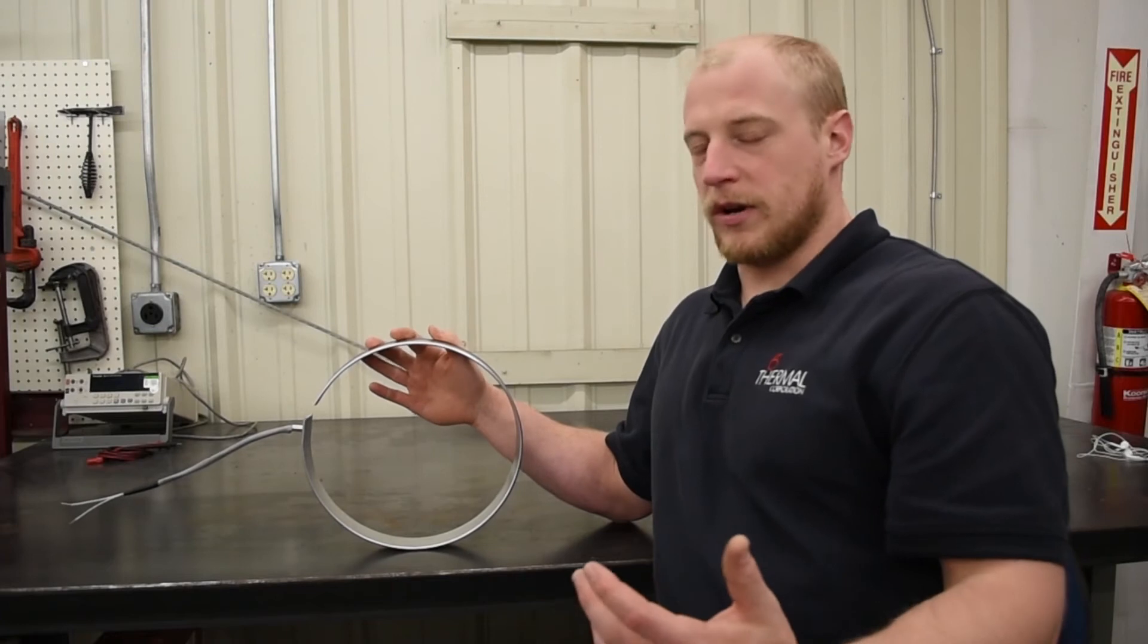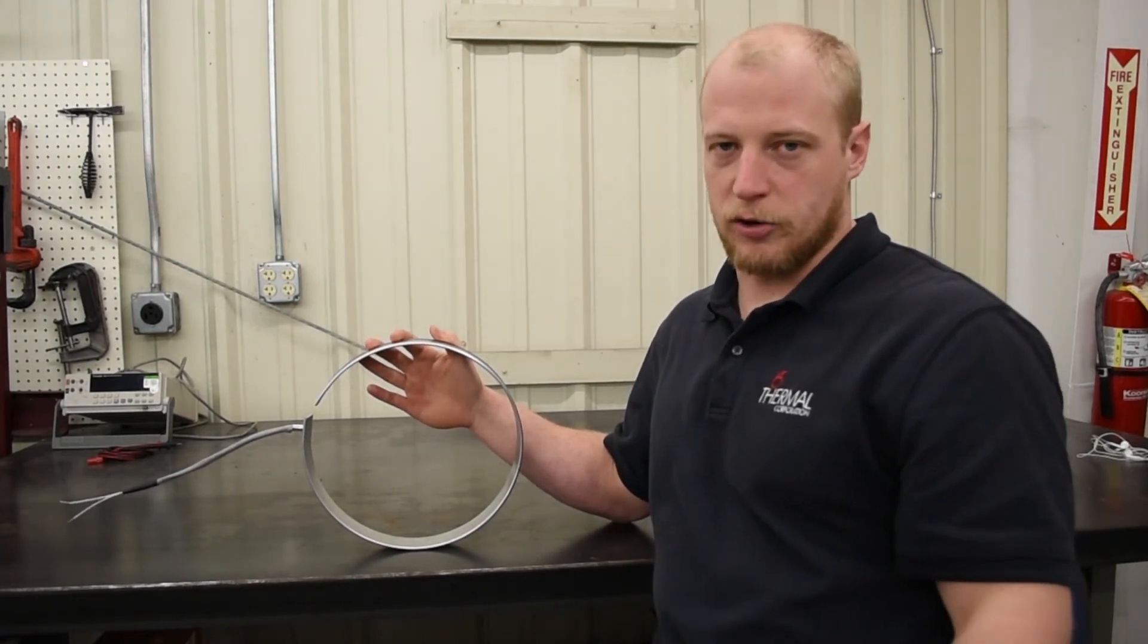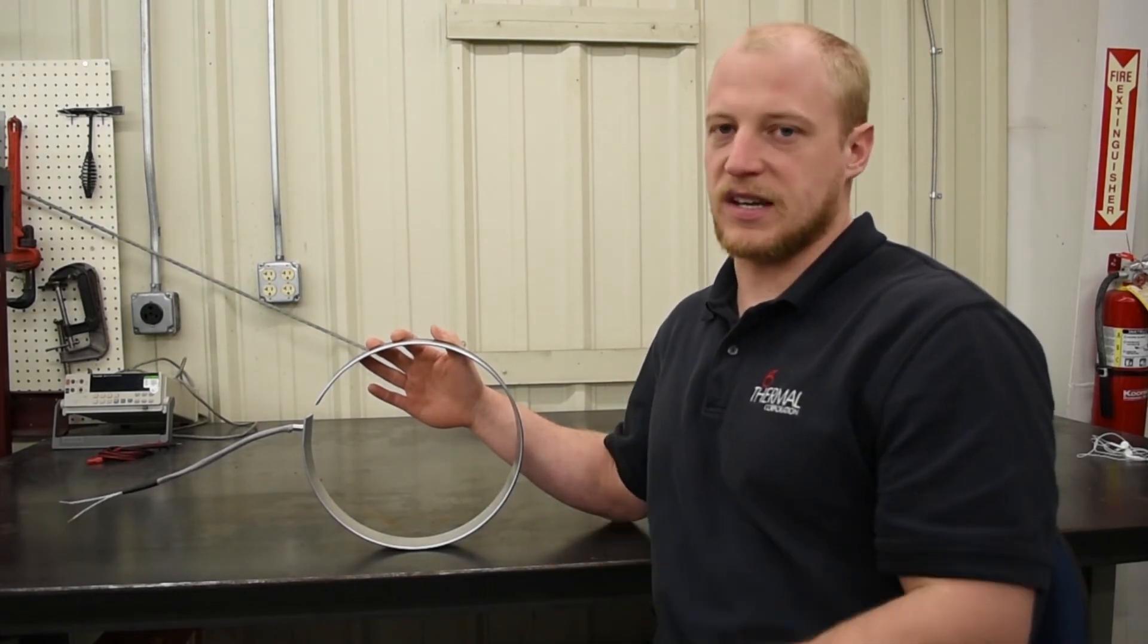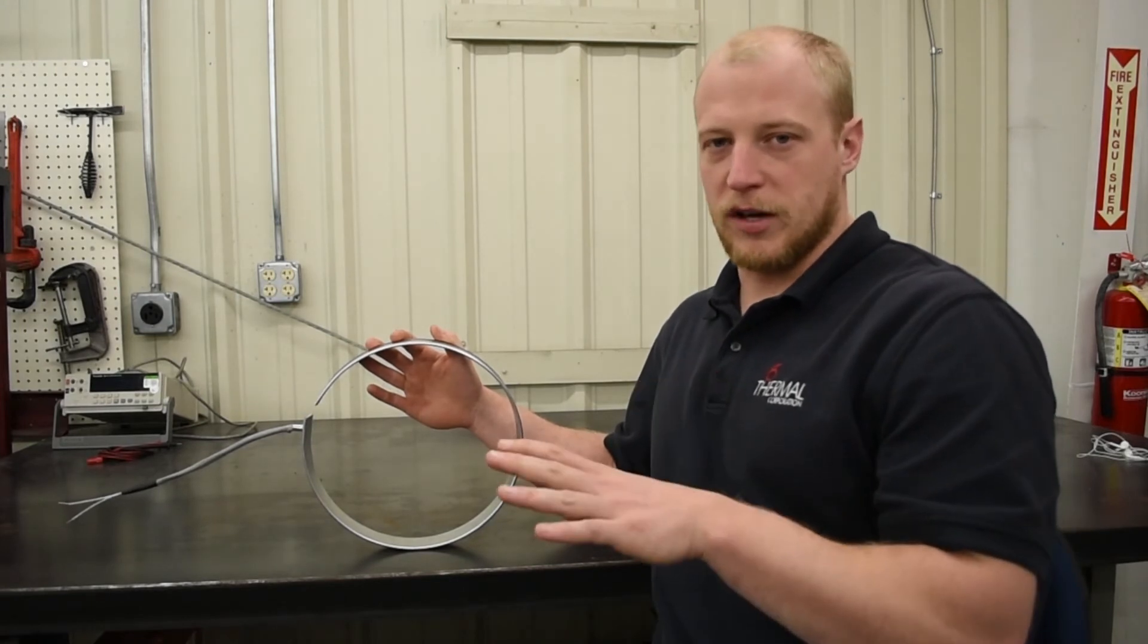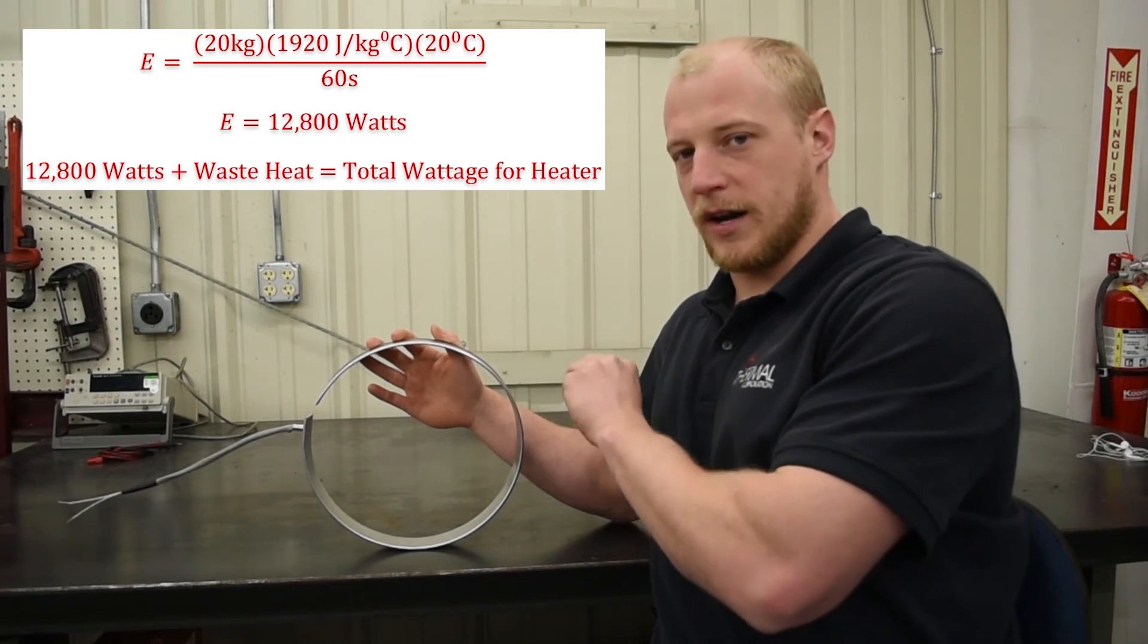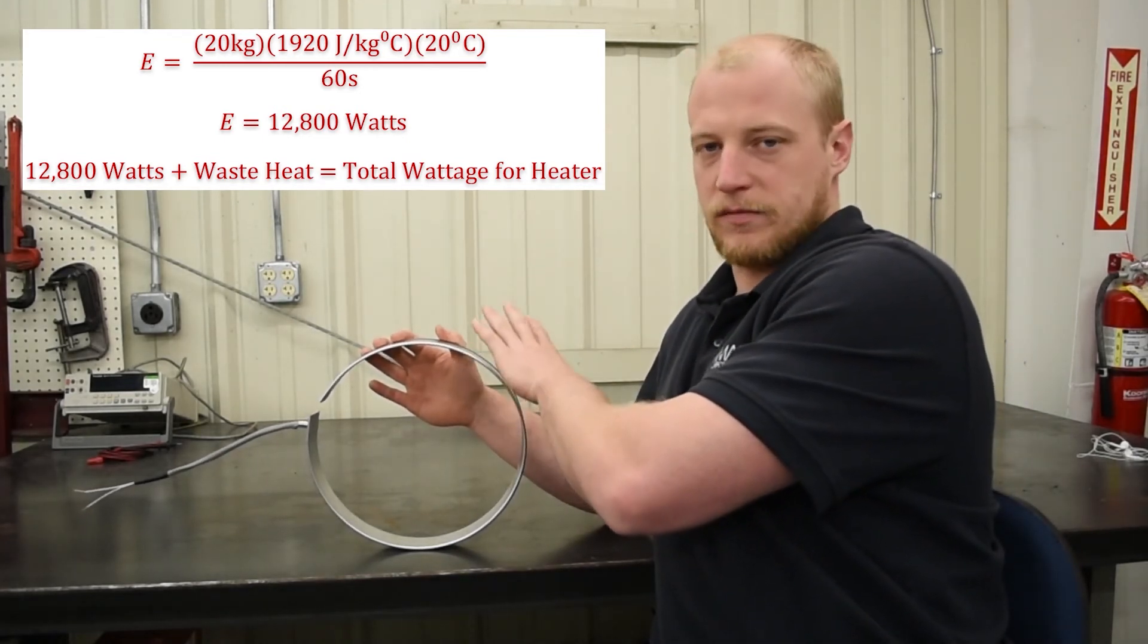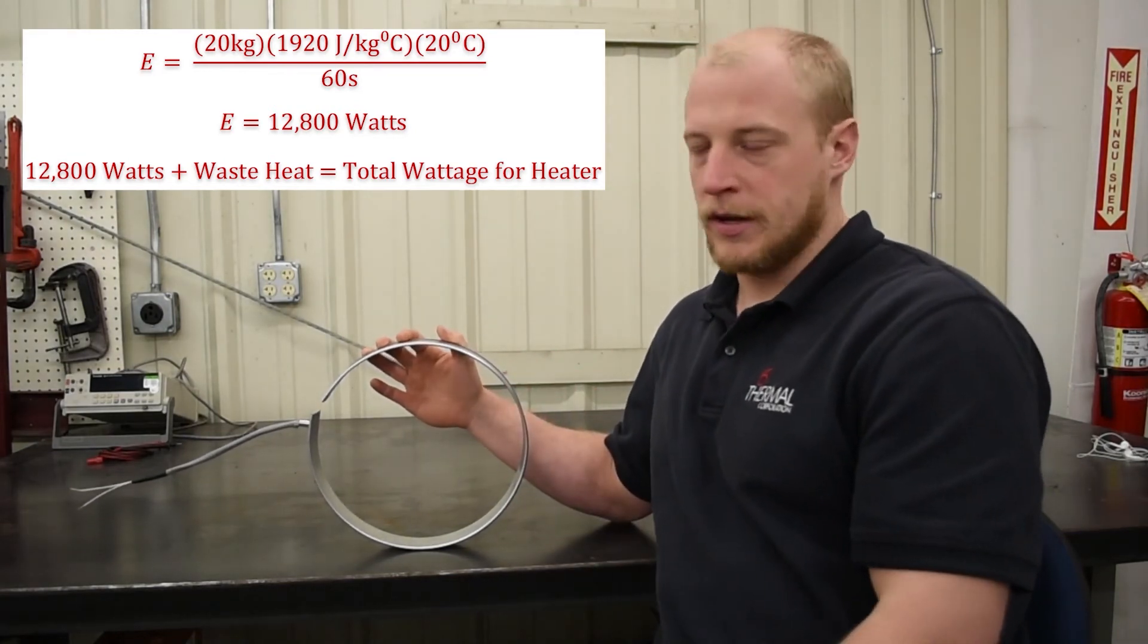Let's say we want to heat a chunk of plastic that weighs 20 kilograms. We want to heat that up by 20 degrees Celsius, and we want to do that every minute. We plug in all those numbers and that gives you a wattage. You then take that calculated wattage, add it to the wattage from your waste heat from the graph, and that's the wattage you need in your heater. That will usually get you pretty close.